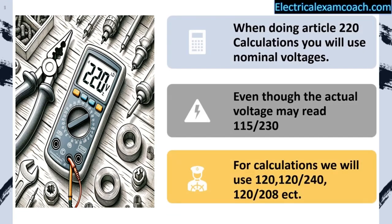When doing Article 220 load calculations, we're going to be using nominal voltages. Although our actual meter reading might be 115 or 130, for our calculations we're going to use nominal system voltages like 120, 240, or 120/208. It makes it a lot easier, not having to guess what the actual voltage readings might be.